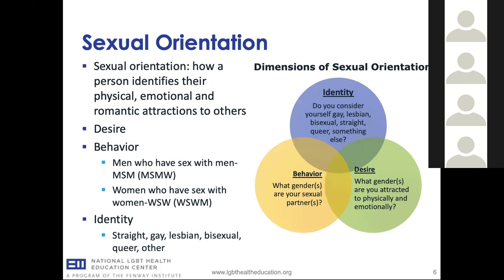Behavior refers to whom someone is engaging in sexual activity with and what kind — using concrete operational terms like women who have sex with women, men who have sex with men, and so on. Identity refers to the range of labels and communities in society that someone may identify with regarding their sexual orientation, like straight, gay, lesbian, bisexual, and queer. We can't make assumptions based on how someone looks or sounds — for example, there are many men who have sex with men who identify as straight. So in healthcare, we have to ask people how they self-identify, and that's what we document.